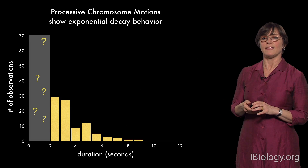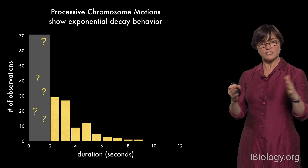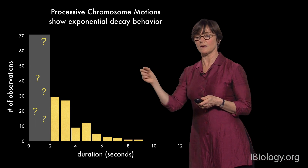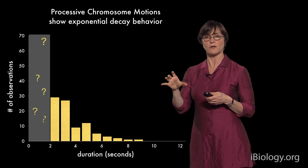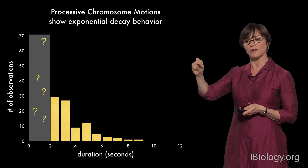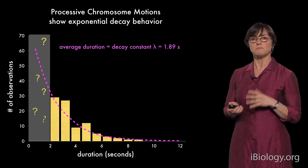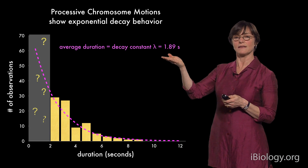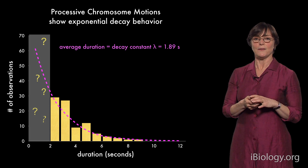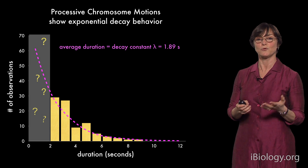What we found is that these motions show behavior typical of motor-driven motion, in that the duration of these motions shows an exponential decay. We can't measure the shortest motions because their duration is still too short compared to our frame rate, but for longer motions where we can track a single pairing center over multiple frames, we can measure their duration. From this curve, we calculate that these motions last an average of a little under 2 seconds. To get the full picture, we'd really like even faster microscopy, and that's something that is constantly being improved.